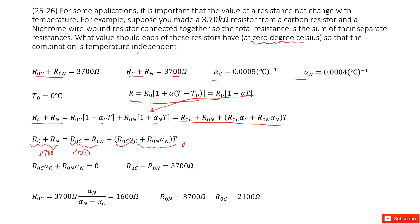And it tells us this combination is temperature independent. So that means no matter what temperature is, this term must be zero. So this term in the bracket, R0C times alpha C plus R0N times alpha N equals zero. So this condition can make this term zero no matter what temperature is.